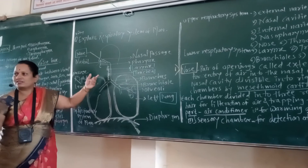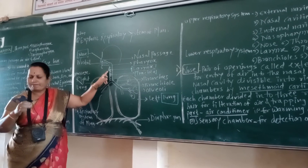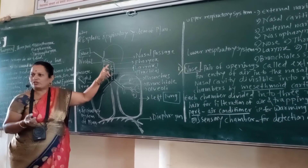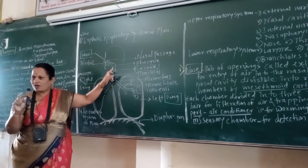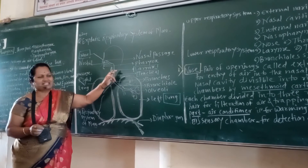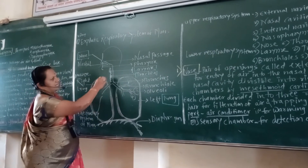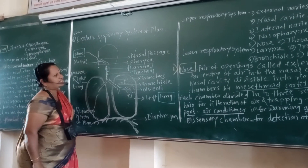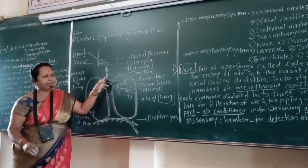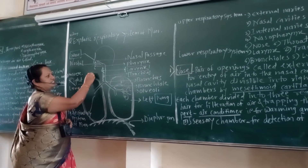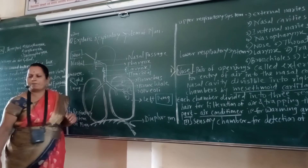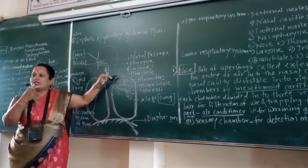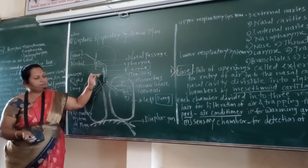Pharynx is a common passage for air as well as food — food from the mouth and air from the nose. Pharynx continues into a sound box called the larynx. Larynx consists of cartilage and muscle flaps. When air passes through the larynx it produces different types of sound, therefore it is called the sound box or voice box. There is also a long narrow tube called the trachea, which is supported by half C-shaped cartilaginous rings which prevent the collapse of the trachea.